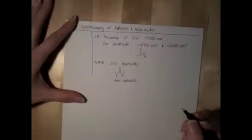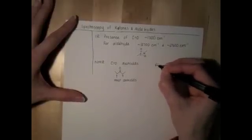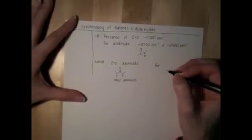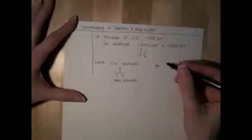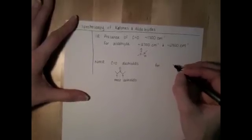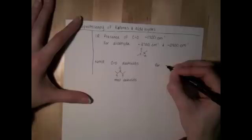Remember that when we have an aldehyde, that proton that's attached to the carbonyl group shows up all the way down around 10 parts per million in the proton NMR.